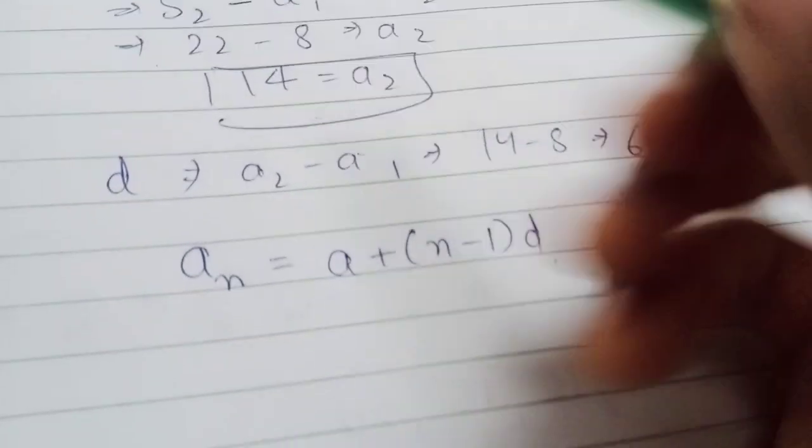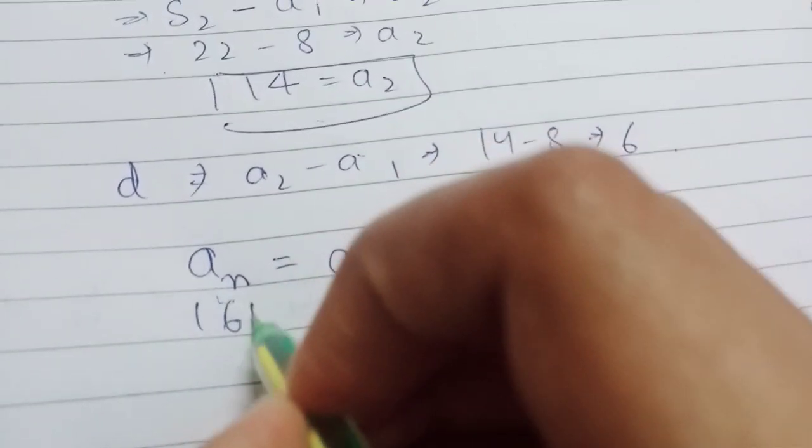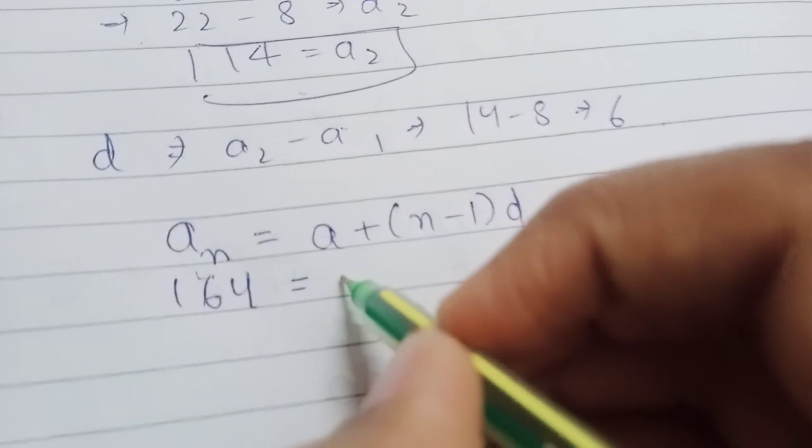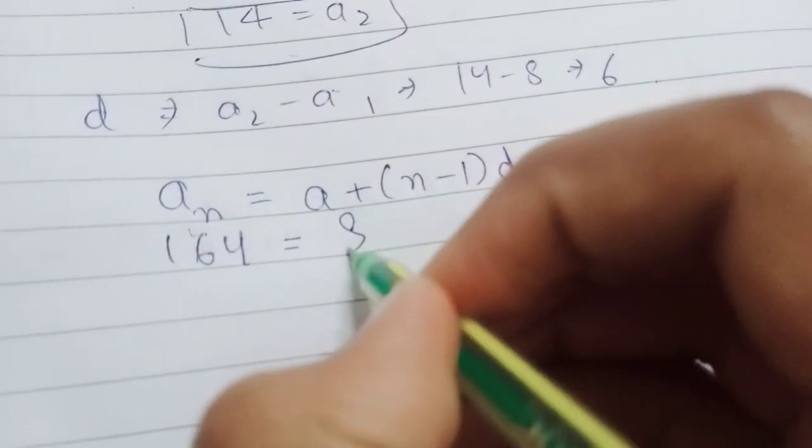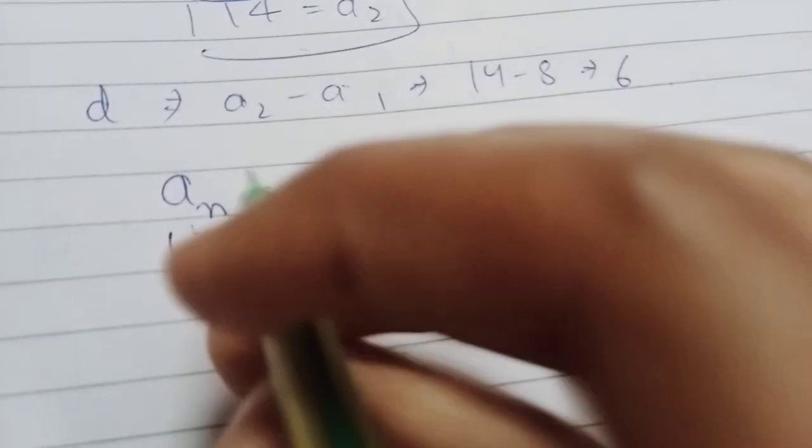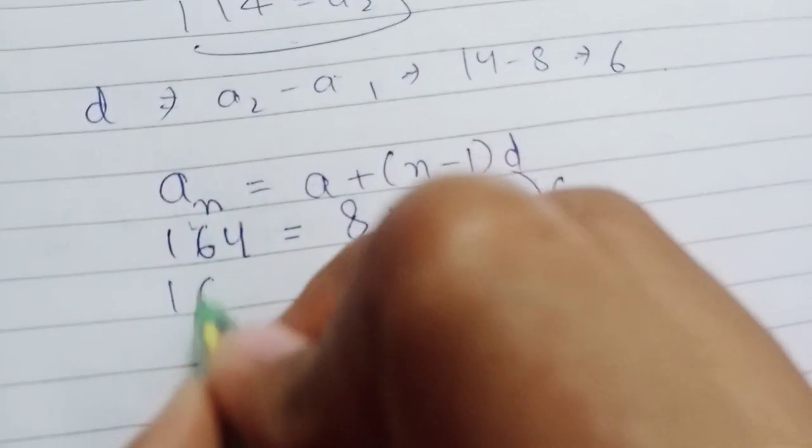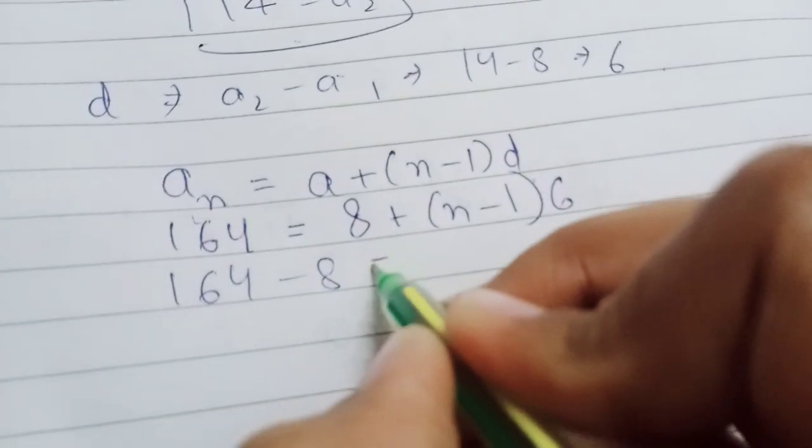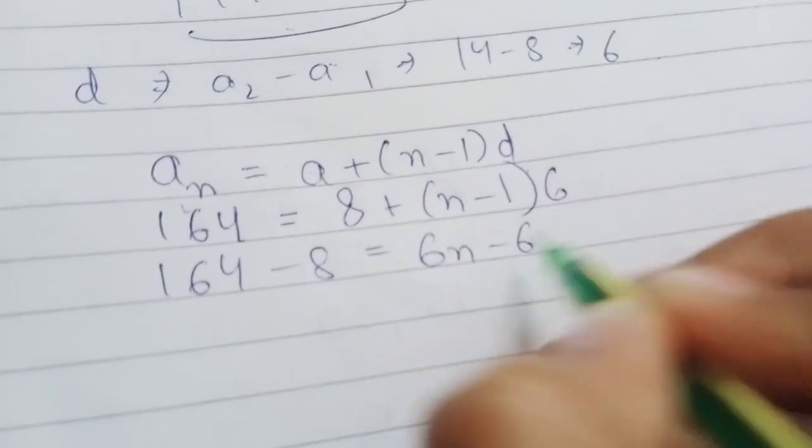So, we know that aₙ will be 164 because we need to find the value of n. a is 8 and d is 6. This will be 164 minus 8 is equal to 6n minus 6.